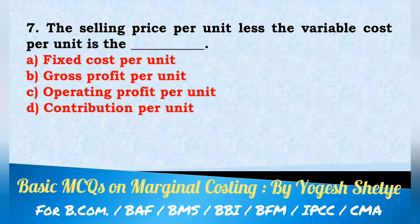Question 7: The selling price per unit less the variable cost per unit is — the fixed cost per unit; gross profit per unit; operating cost per unit; contribution per unit. Selling price per unit less variable cost per unit is the contribution per unit. Answer D.